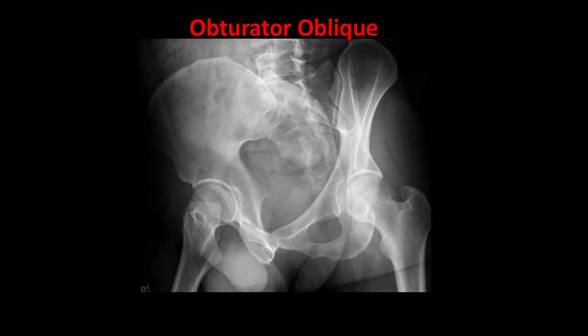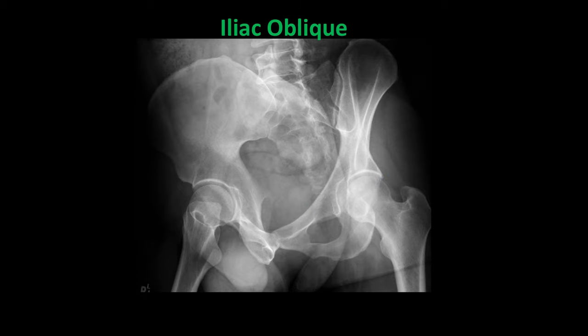The obturator oblique view, shown here on the left, is best for evaluating the anterior column and the posterior wall. Conversely, the iliac oblique, shown here on the left, is best for evaluating the posterior column and the anterior wall.